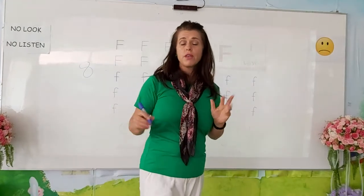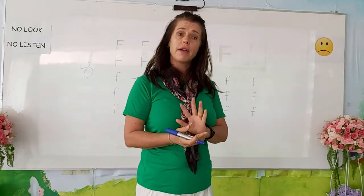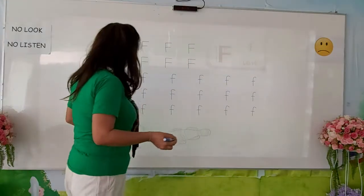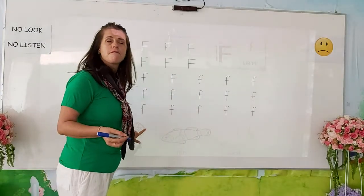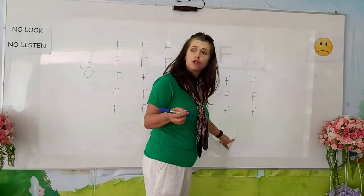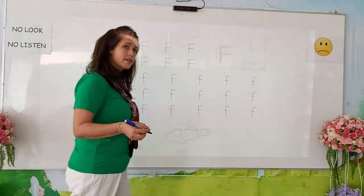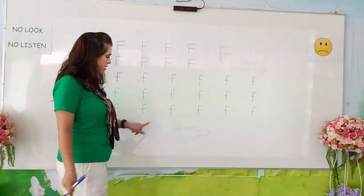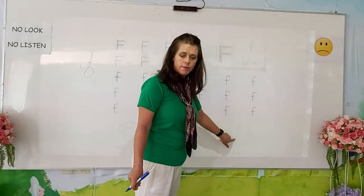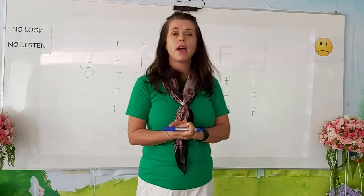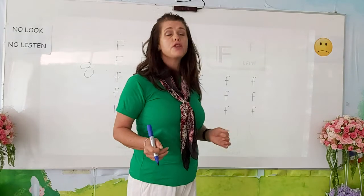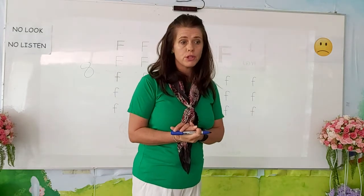Now we are done with our tracing of our F's. We are going to go through the pictures: this is a fan, fish, and foot. Once again — fan, fish, and foot. If you are finished, you can color your pictures any color, and then you can close your books.